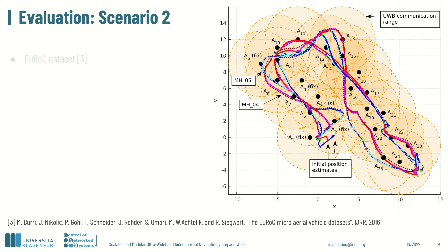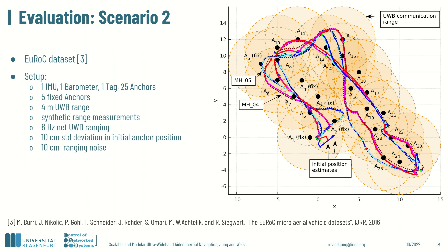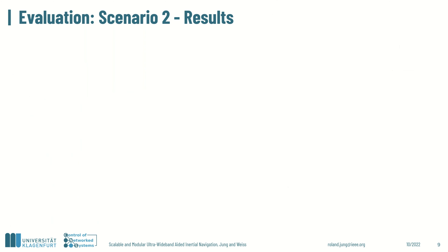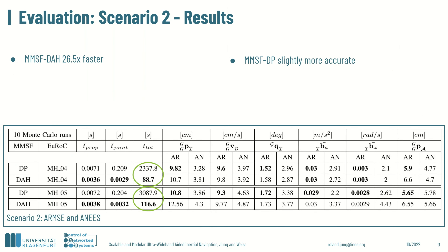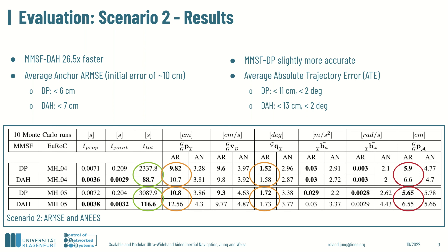In the second evaluation, we simulated a more realistic localization problem using the machine hall sequences of the EUROC dataset. Again, we used an IMU, barometer, tag, and 25 anchors which were distributed across the trajectories, while five of them were set to be fixed. The EUROC communication range was lowered to 4 m and the effective rate between the tag and other anchors in range was set to 8 Hz. We compared filter strategies again in 10 Monte Carlo simulation runs. The proposed approach was 26 times faster while being slightly less accurate. The average anchor error was below 7 cm starting from approximately 10 cm. The average absolute trajectory error was below 13 cm and 2 degrees with consistent navigation state estimates.